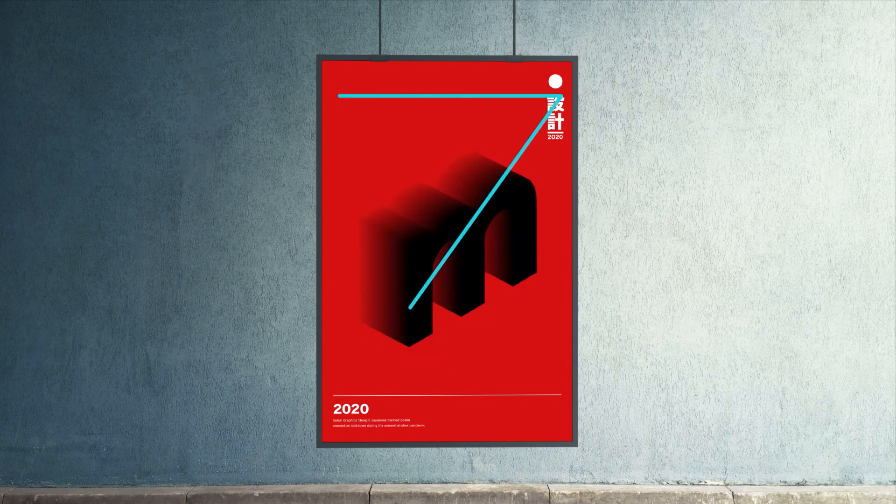We can also see that the Z-pattern has been used. The Z-pattern suggests that a viewer's eye starts in the top left corner, migrates over to the right, and then down in a zigzag pattern. This gives the viewer a path to follow, which is always a good thing for a design.